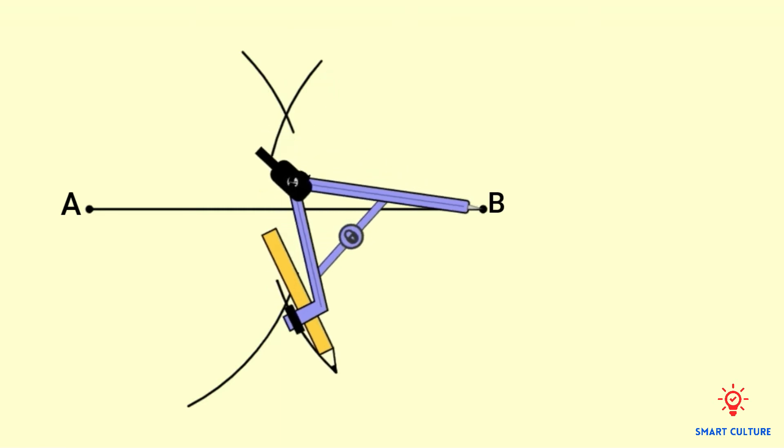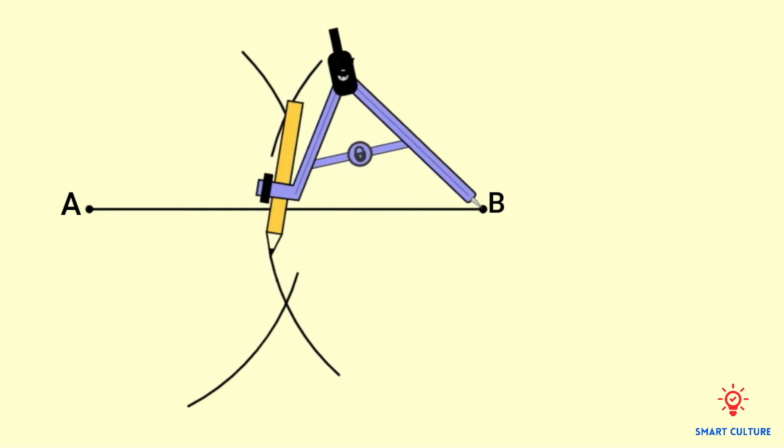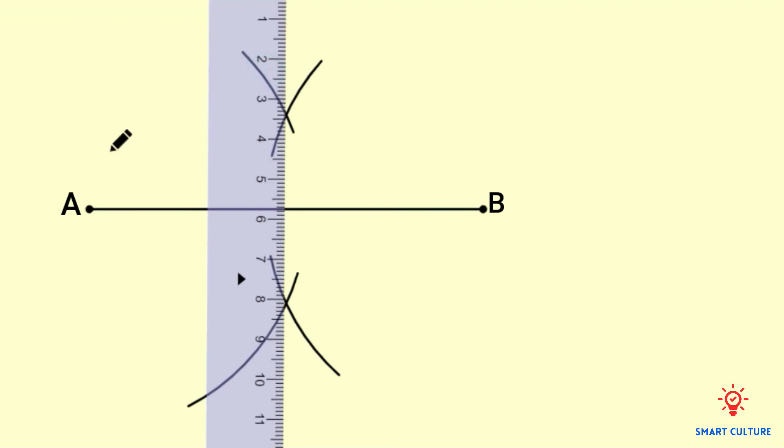Now you can use a ruler to join the points where the arcs intersect. We will label this line segment as well. Let's label it CD.